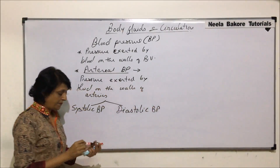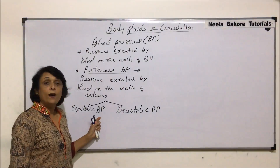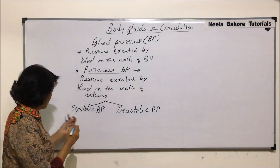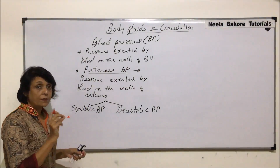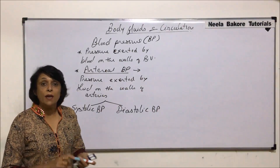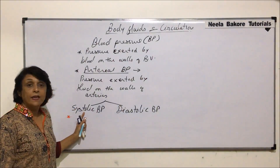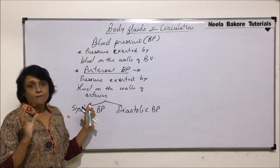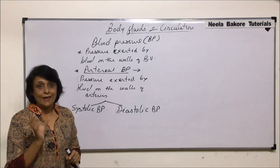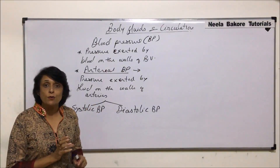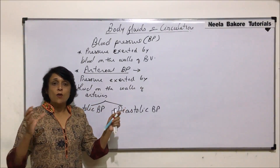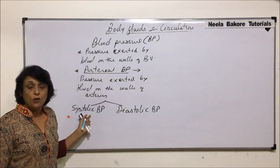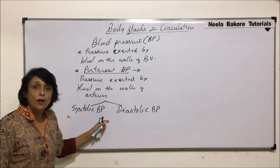Arterial blood pressure is of two types: systolic blood pressure and diastolic blood pressure. Systolic blood pressure is the pressure exerted by the blood on the walls of the arteries when ventricular systole, or contraction, is completed. The ventricles have thick walls and contract with great force, so when the ventricles have fully contracted, that is when systolic pressure is exerted on the walls of the arteries.